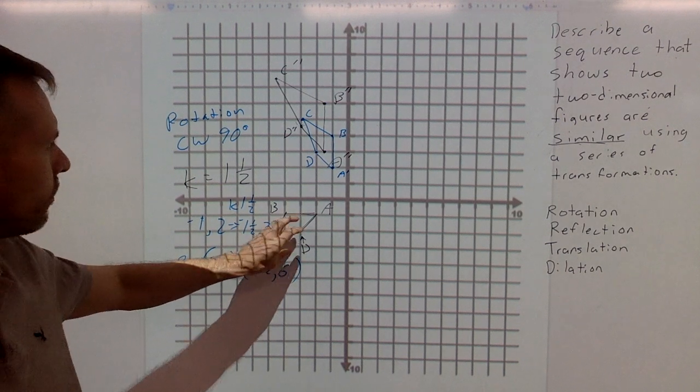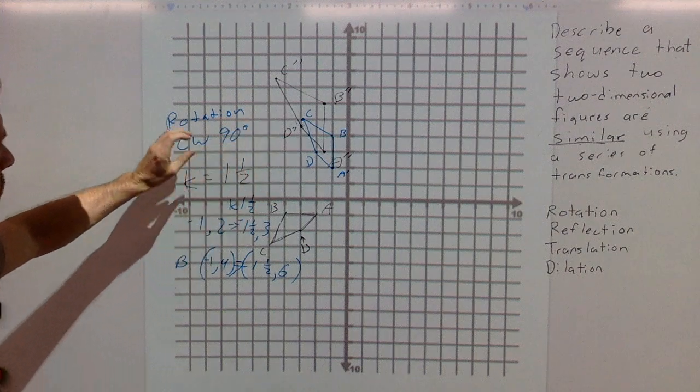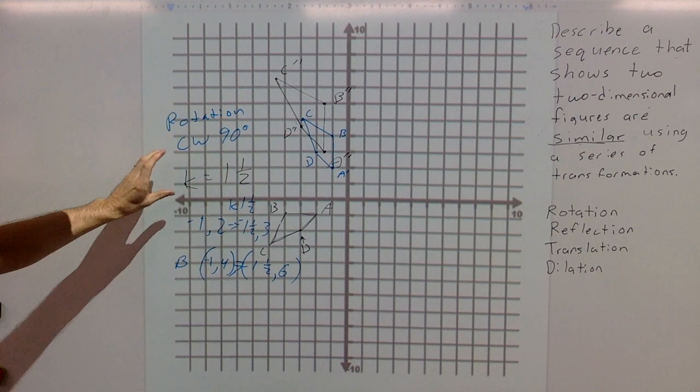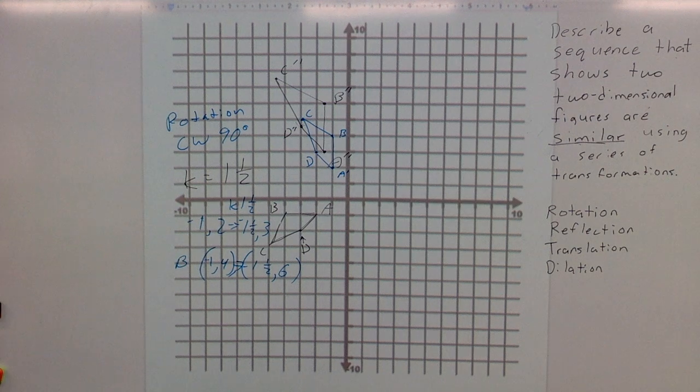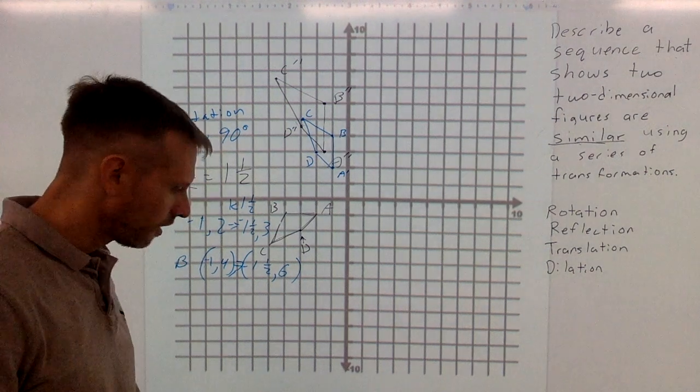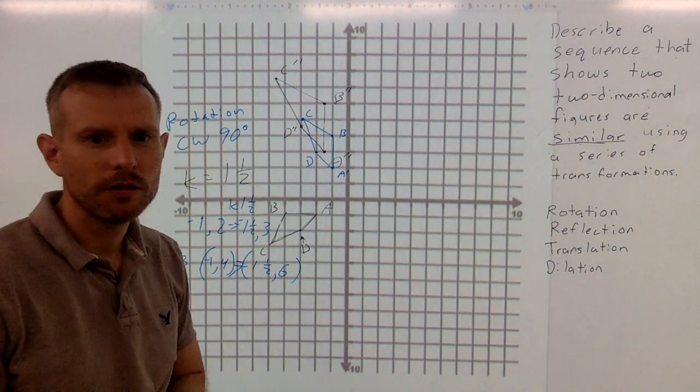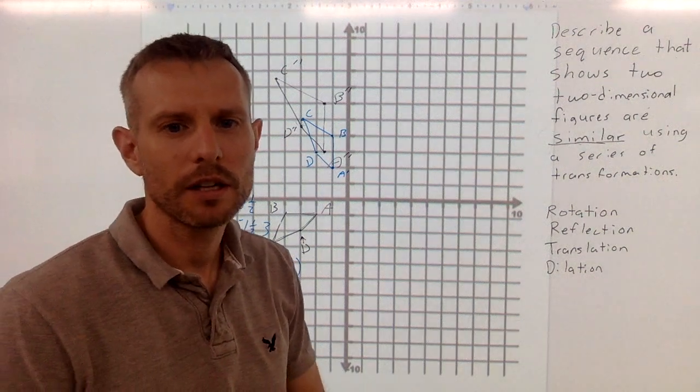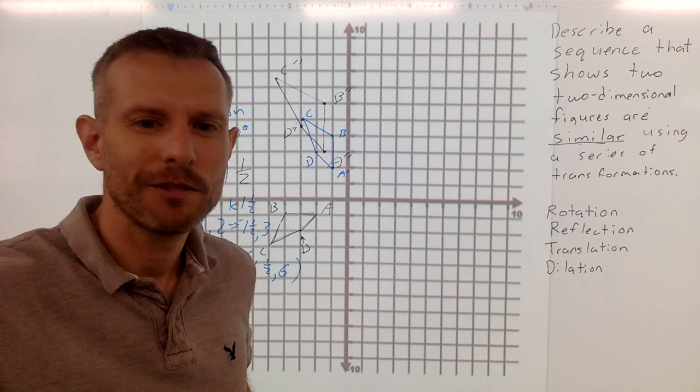So, if we want to move from this original image to the new image, we need to rotate clockwise, 90 degrees, and then dilate by a scale factor of one and a half. I hope that was clear enough. You can always go back and watch it again and ask questions in class. Thank you for watching. Have a good day.